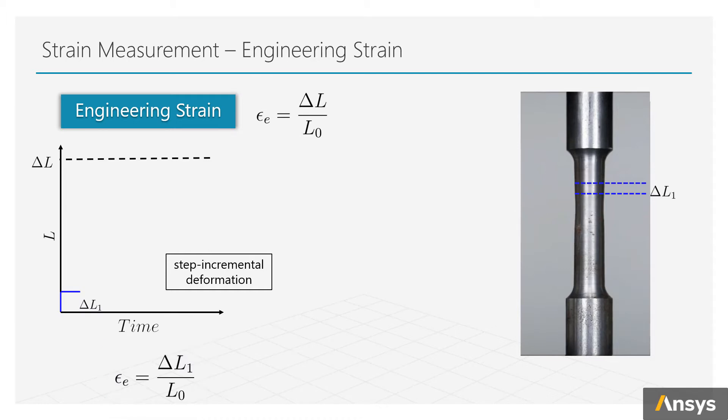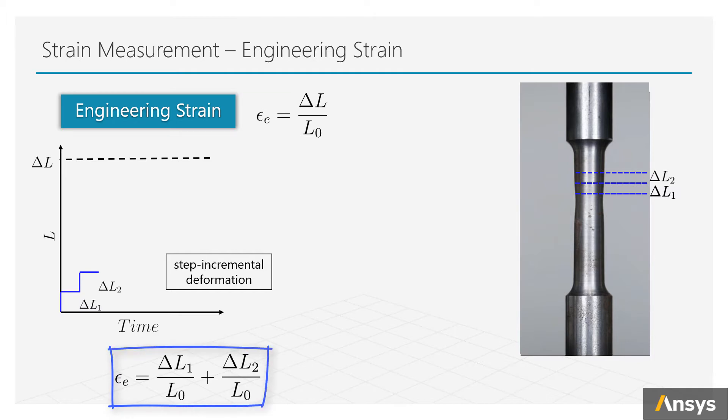For the second step, another increase in length happens. The value is delta L2. Accordingly, we draw another flat step increment. Now, the strain value is the summation of the first step and the second step value, as shown here. Same thing happens for the third step and all the following steps, till the final step. And the strain at the last step is the summation of all these terms. Since the denominator is the same, we can directly add up the numerator, which leads to the expression delta L over L0.